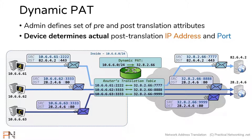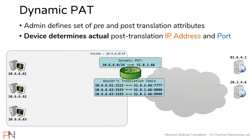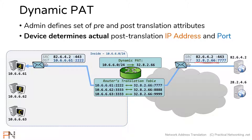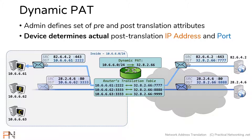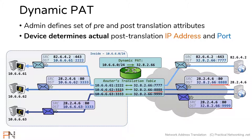That covers the outbound packets. Now let's show the response traffic coming back. When the first server responds to host A, it responds to IP 32.8.2.66 port 7777. That matches the entry in the router's translation table, and the router knows to untranslate it to host A's IP address on port 2222. When the next response comes back on port 8888, the router matches that to the translation entry for host B. And when the packet comes in on port 9999, the router knows to untranslate it to host C's IP address and port 3333.